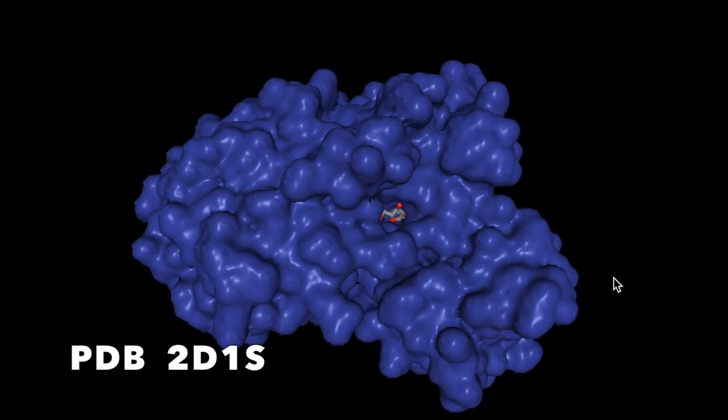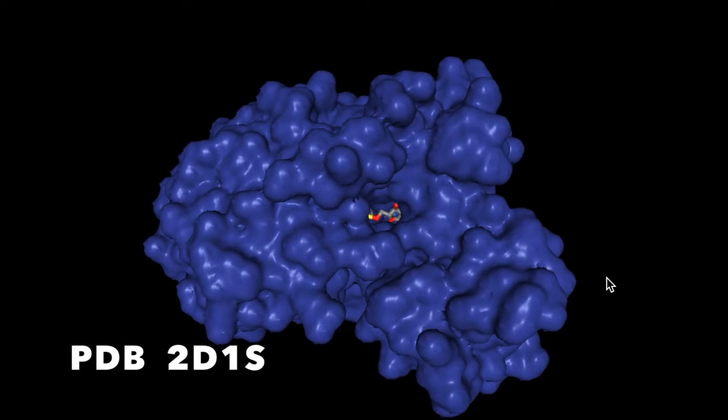This crystal structure of Japanese firefly luciferase is complex with a high-energy intermediate analog. You can see how the two domains came together around the substrate.